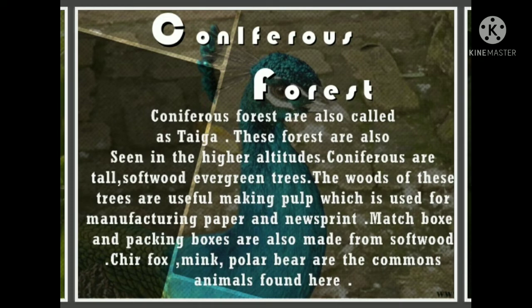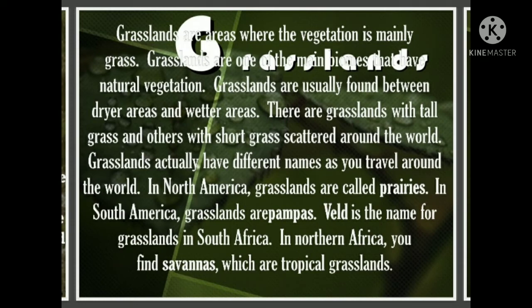Now, grasslands. When moisture and rainfall decrease in comparison to forest areas, grassland areas form. The size and density of trees also decreases. Short, stunted trees and grasses — like savannas, prairies — occur due to less rainfall, meaning the grassy area is more dominant. The types of grasslands are tropical grasslands and temperate grasslands.